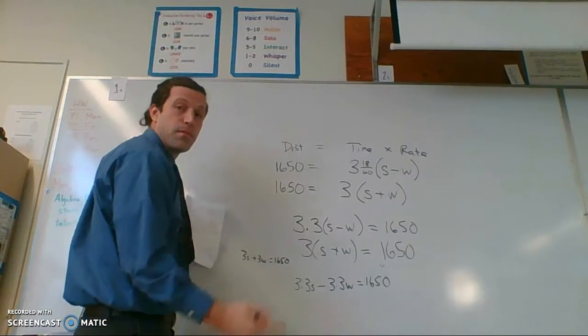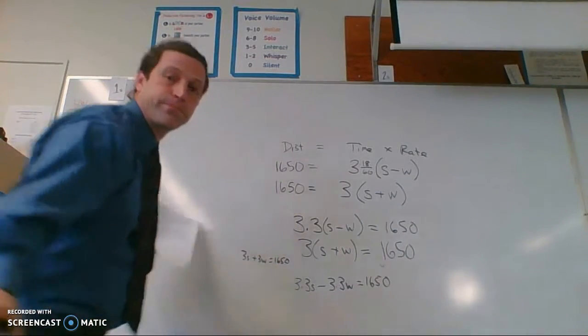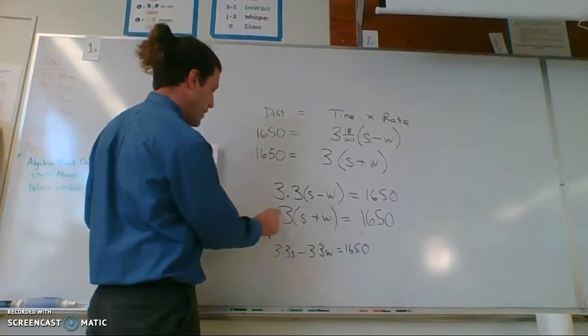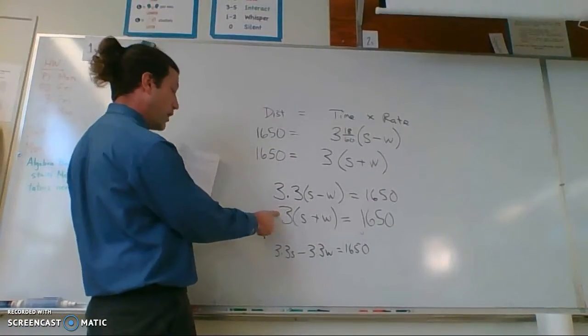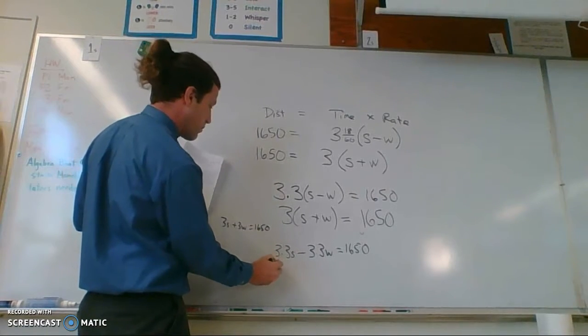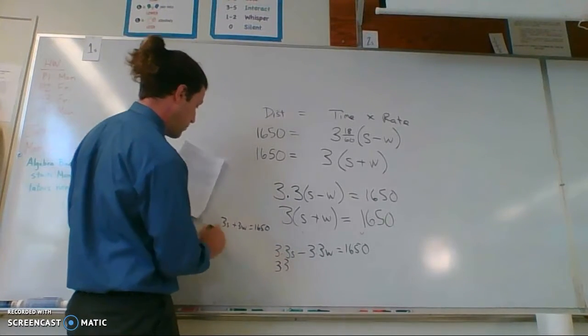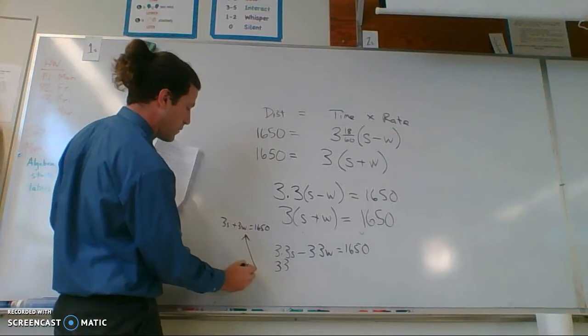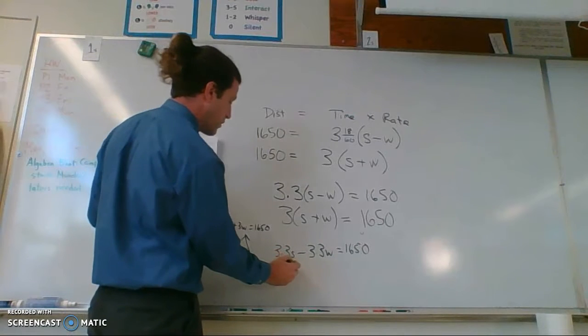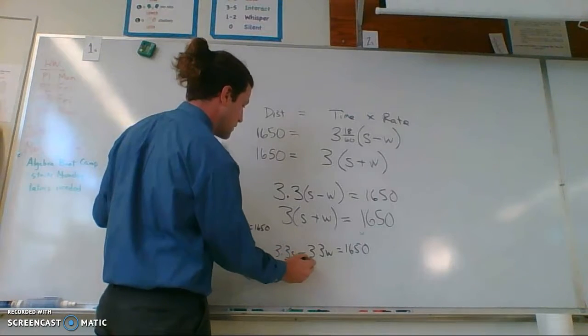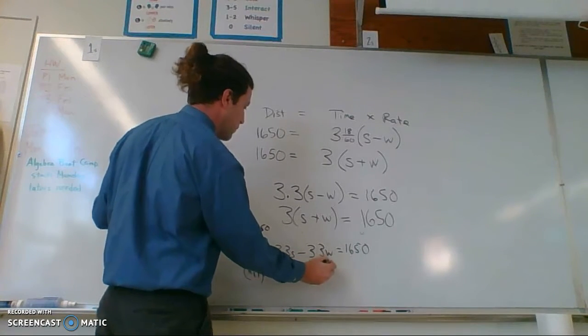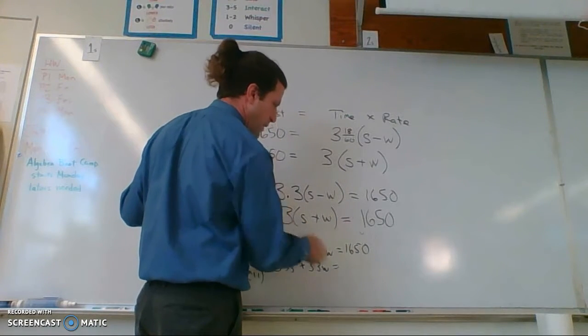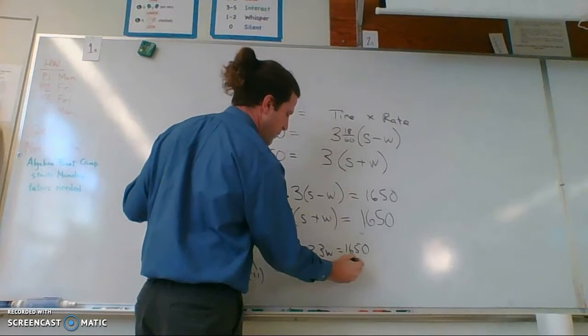To make them match up, I'm going to multiply this one by 1.1. So then I'll have 3.3, then I'm going to multiply this by 1.1. So I'll have 3.3S plus 3.3W equals this time 1.1. I'll have to add one system of 1850.